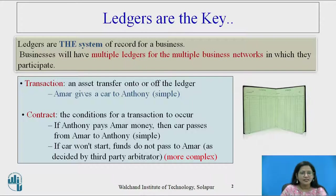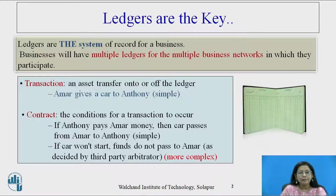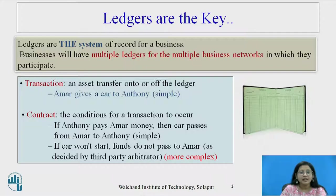The second terminology is contract: the condition for a transaction to occur. If Anthony pays Amar money, then the car passes from Amar to Anthony — a simple contract. If the car won't start, funds do not pass to Amar as decided by a third party. This is somewhat more complex.